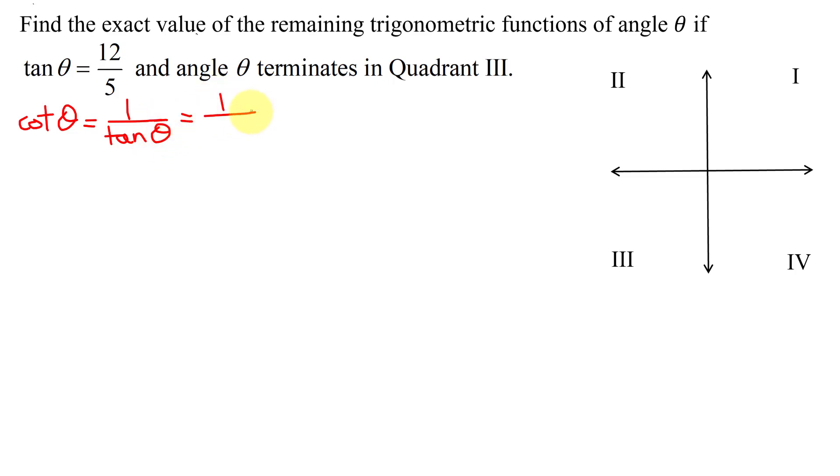1 divided by the tangent of theta is 12 fifths. And how do you take the reciprocal of a fraction? You just flip it upside down. So the reciprocal of 12 fifths is 5 twelfths, and that is the value for the cotangent of theta.